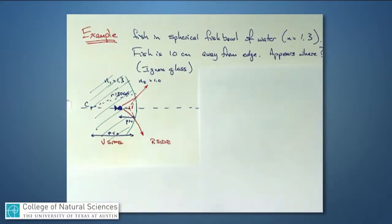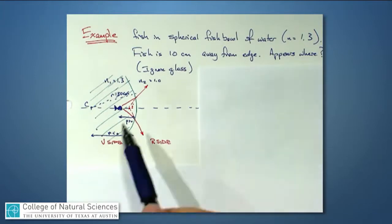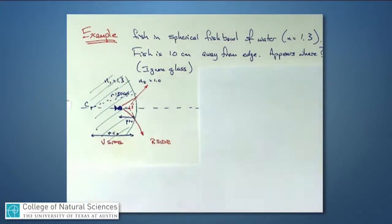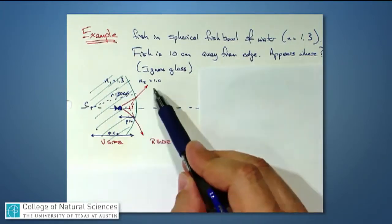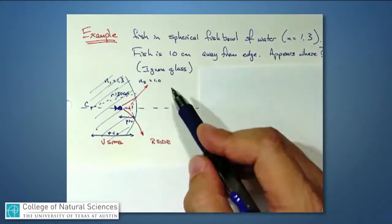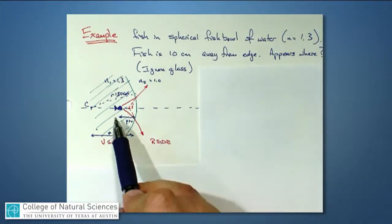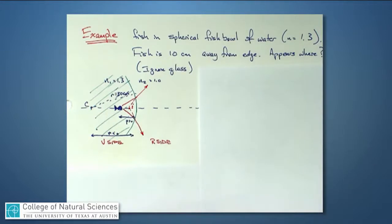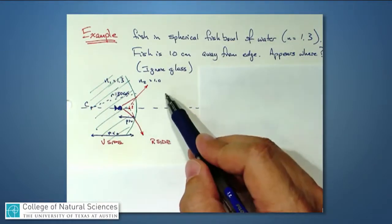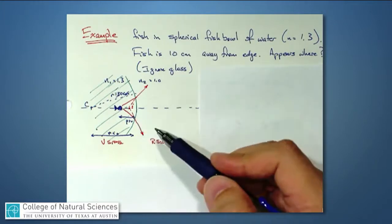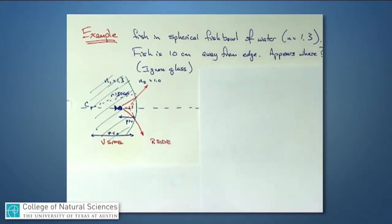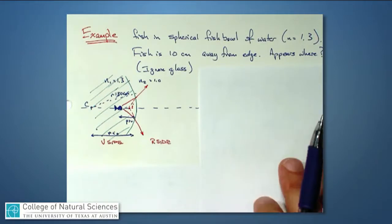Suppose the water, which has an index of about 1.3, fills the entire fishbowl. Then this big spherical fishbowl looks like a refracting surface as the light leaves and comes out to where we are, standing in the air where the index of refraction is approximately 1. If the fish is about 10 centimeters away from the edge, the question is: where would we see the fish from out here in the air looking back into the fishbowl?